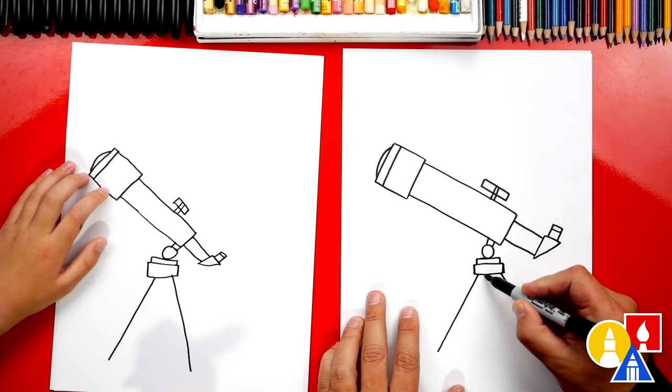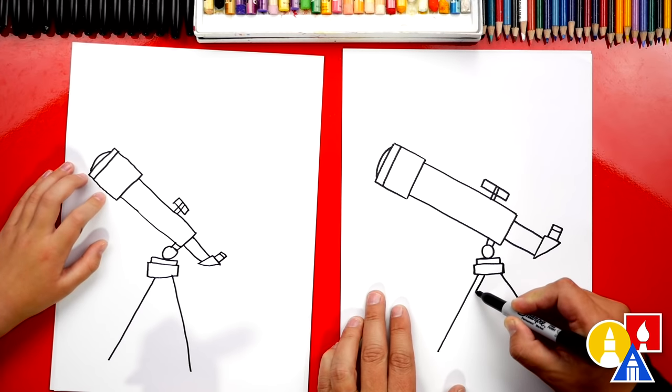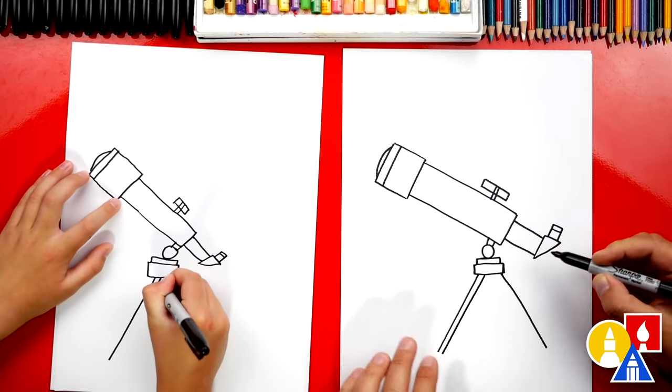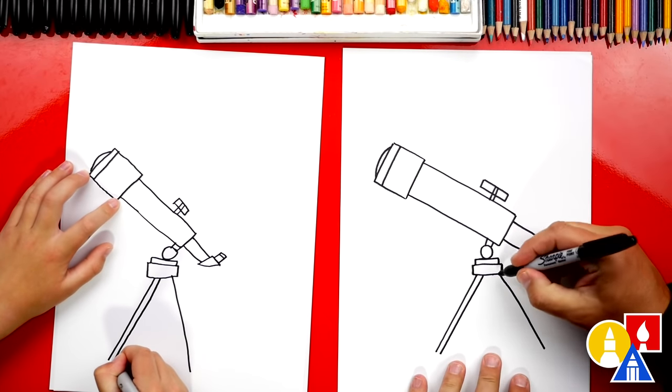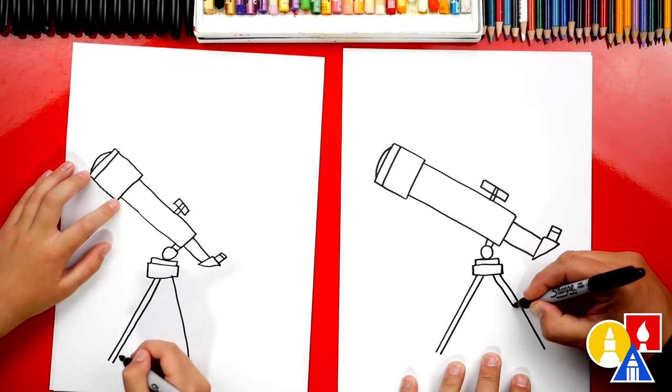Then let's add thickness to our legs. We're going to draw another parallel line next to it. If you want, you could taper or get closer towards the bottom. Then we're going to draw another one on the other side.